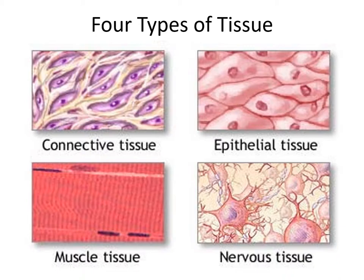Before we continue, I want to remind you that we have four types of tissue. We have two that are very specialized: muscle tissue, which consists of cells that contract forcefully to bring about movement, and nervous tissue, which consists of cells that send out electrical signals — action potentials. Epithelial tissue is always exposed to an open space, and connective tissue ties all of these different tissues together.